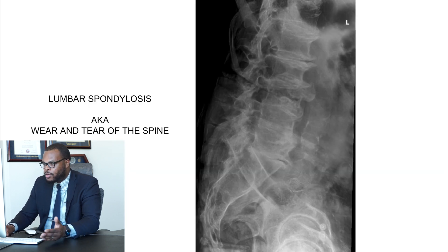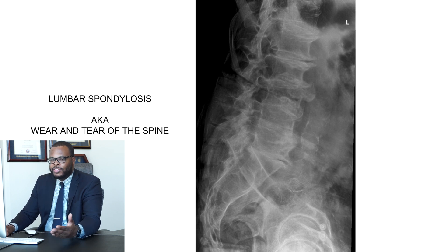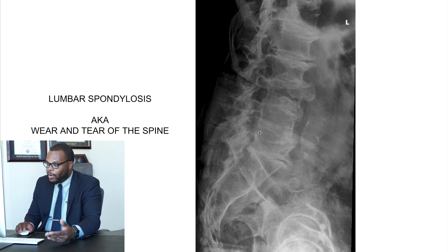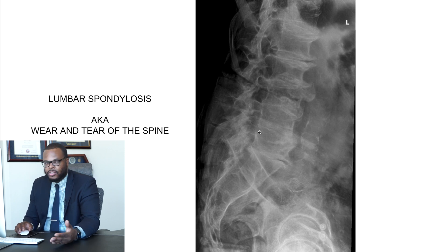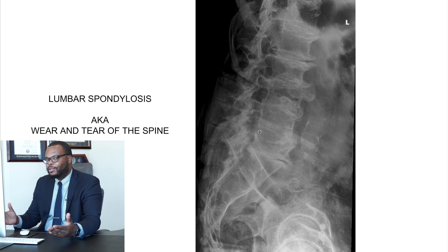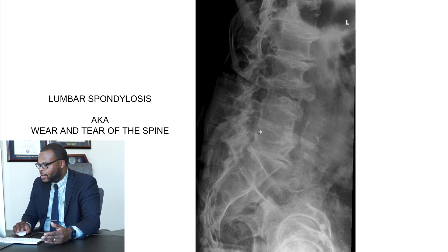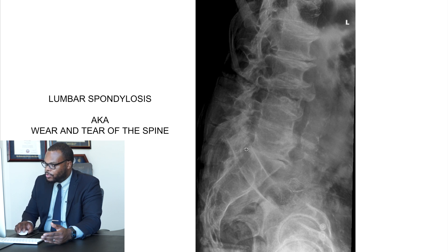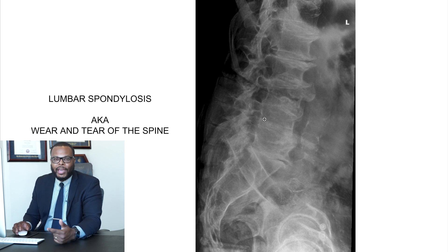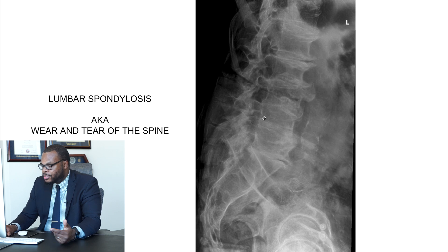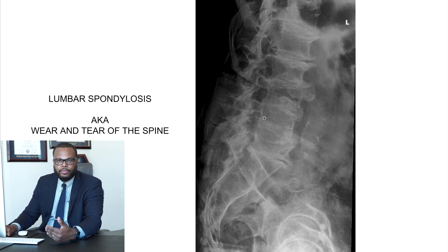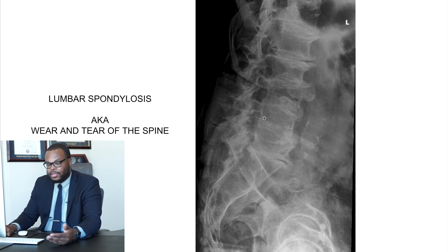A couple of cases — lumbar spondylosis. This is basically the wear and tear of the spine; everyone's going to get this as we age. You can see this patient has pretty advanced, pretty severe arthritis of their spine — just like arthritis in your hip, knee, or shoulder. I can't even see their intervertebral disc; they're pretty collapsed. Lots of bone spurs. They've lost their lumbar lordosis, which is the curvature in your spine, and their back is really flat. Most patients who have arthritis we can usually treat with physical therapy, anti-inflammatory pain medications, and sometimes injections.